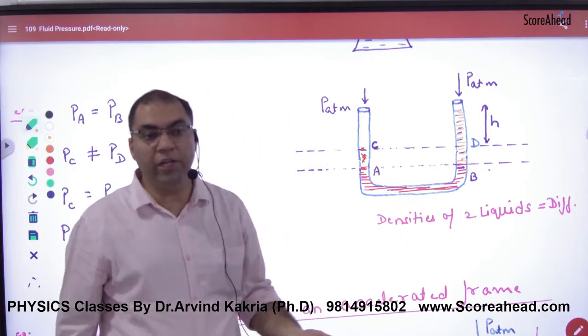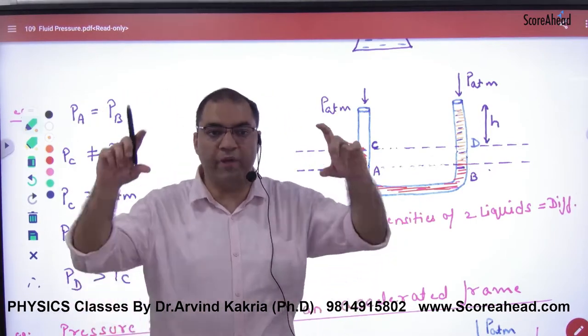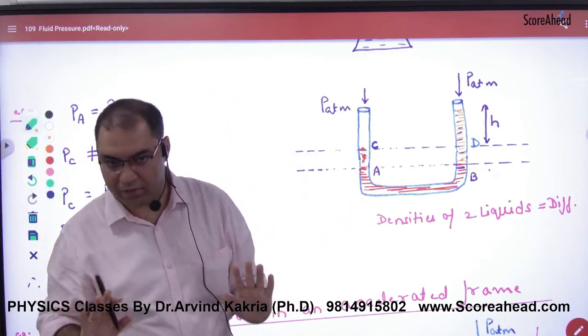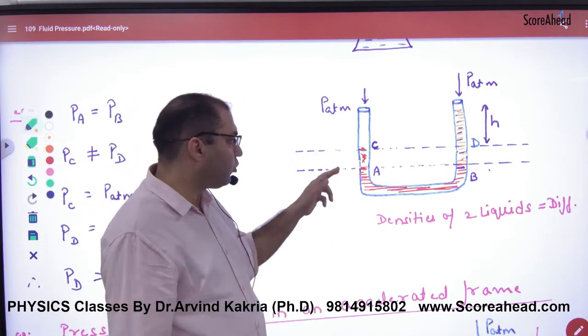If it is one liquid, one density, what does the height on both sides look like? It is the same. That is equal, so point C is at the same level.